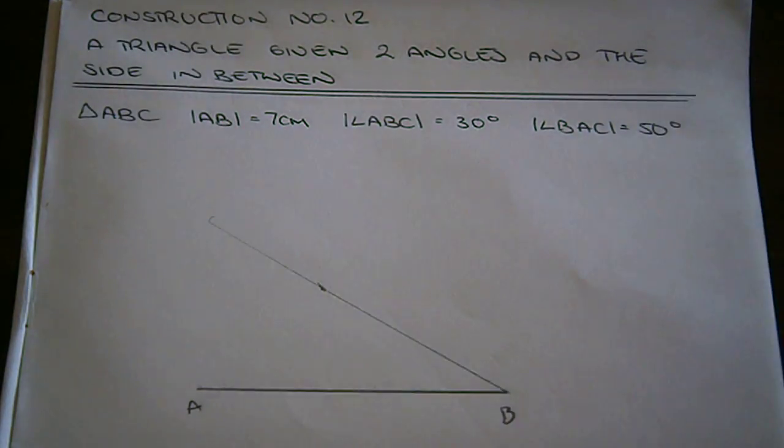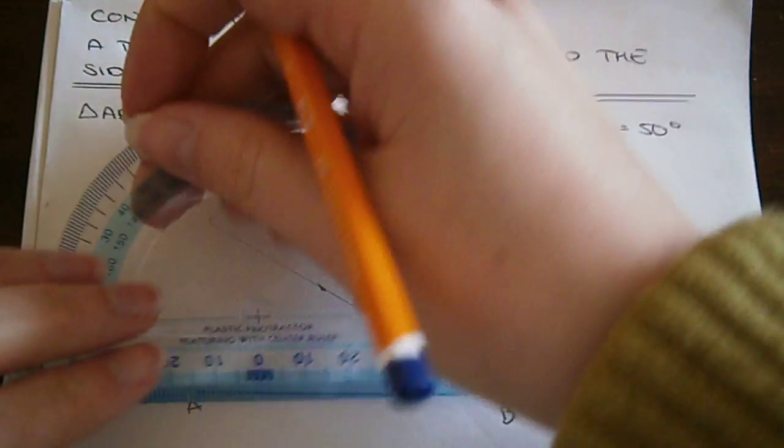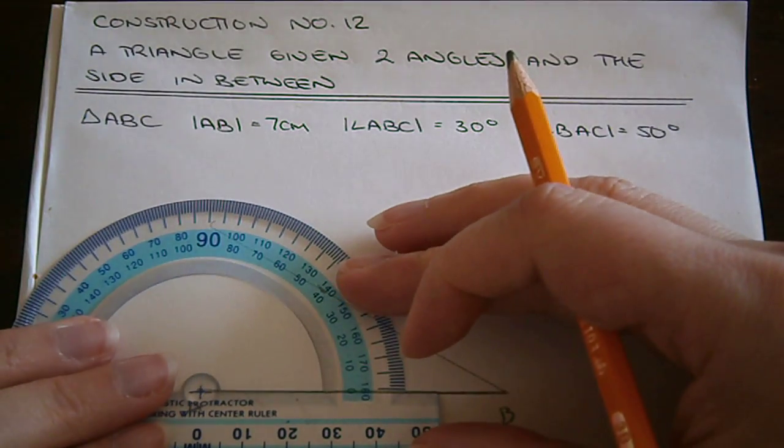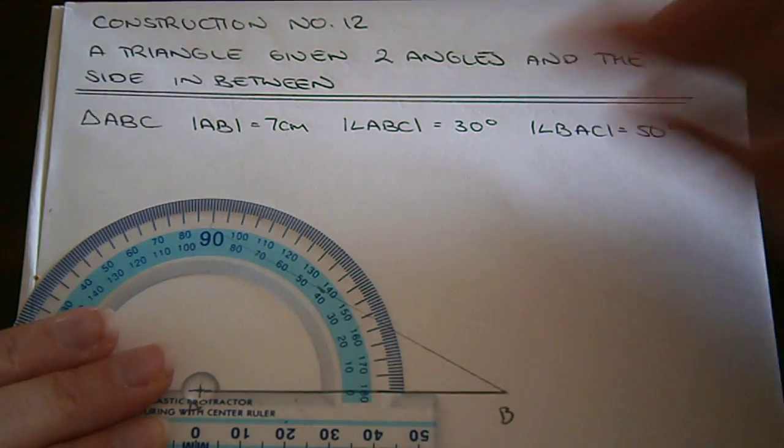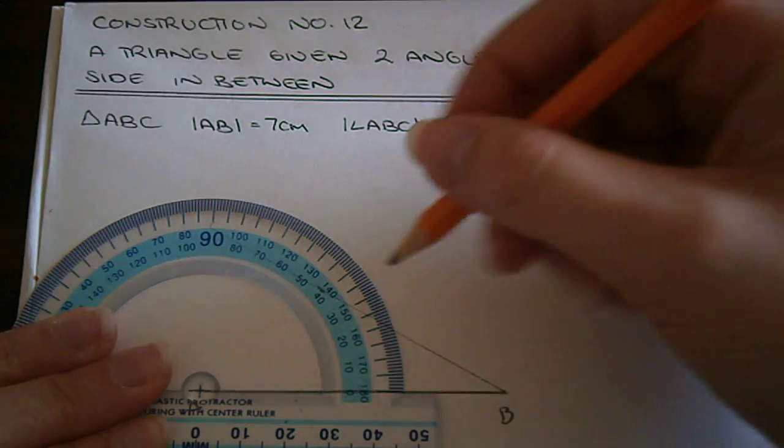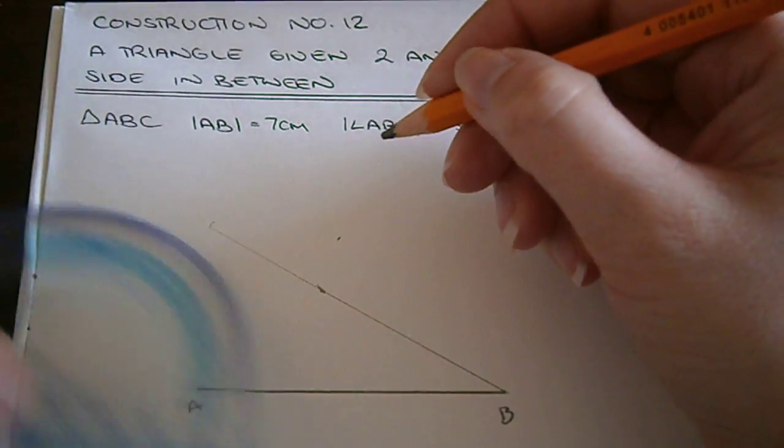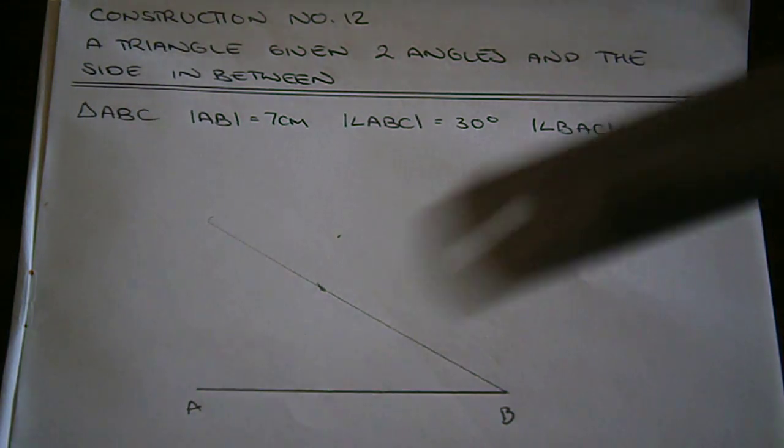Next we want our angle BAC, so we line up our protractor on A and we'll take an angle of 50 degrees. Again, another construction line.